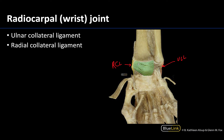Now this large ligament here — I'm not going to have you identify it, but just so you know — it is actually covering all the carpal bones so we can't quite see them here. This is going to cover the anterior portion of the articular capsule as well, and this is the palmar radiocarpal ligament. It covers both the proximal row as well as the distal row of the carpal bones, so it's a fairly prominent, wide ligament associated with the anterior portion of the articular capsule of the radiocarpal joint.